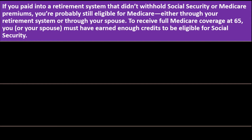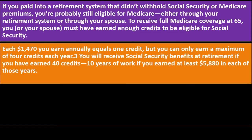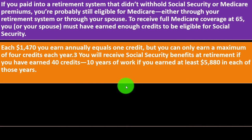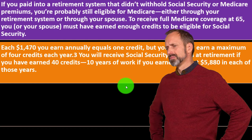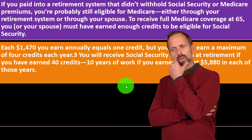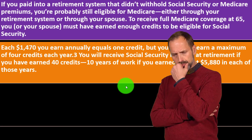You or your spouse must have earned enough Social Security credits to be eligible. Each $1,470 you earn annually equals one credit, but you can only earn a maximum of four credits per year. You will receive Social Security benefits at retirement if you have earned 40 credits — that's 10 years of work — earning at least $5,880 in each of those years.